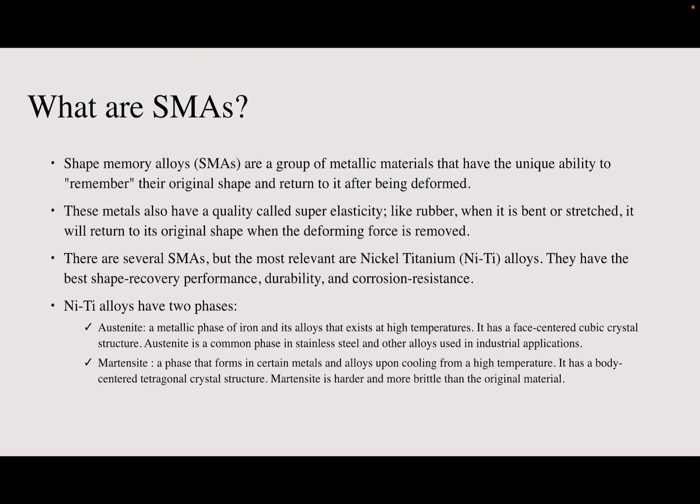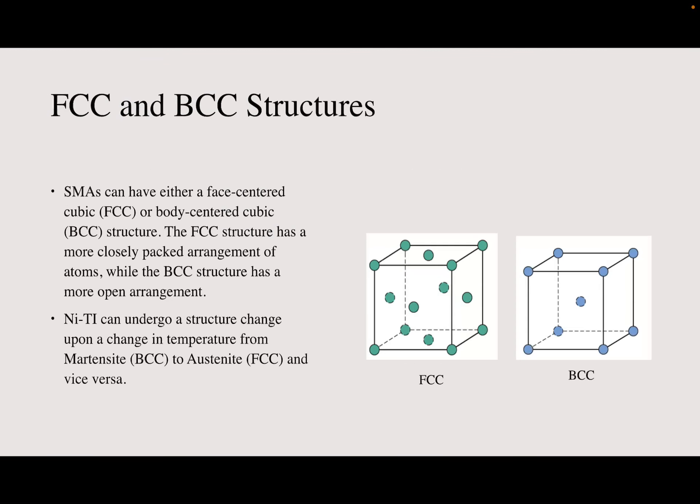NiTi alloys have two phases: austenite and martensite. Austenite is an FCC crystal structure and martensite is a BCC crystal structure. SMAs have either a face-centered cubic or body-centered cubic structure. The FCC structure has a more closely packed arrangement of atoms, while the BCC structure has a more open arrangement.